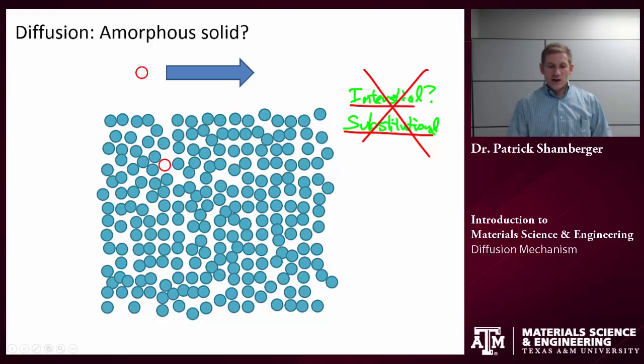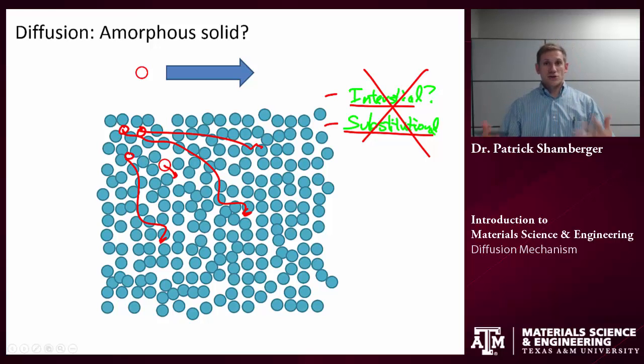So in an amorphous solid, yes, it's possible for atoms to hop from one position to another. And over time, if I had a concentration of atoms in one type, they're going to tend to homogenize. So they'll randomly make their way so they're evenly dispersed throughout the material. But this is not what I would call an interstitial or substitutional mechanism because there's no crystal lattice.